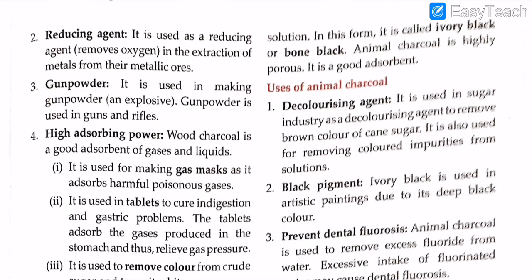Second, wood charcoal is used as a reducing agent — it removes oxygen in the extraction of metals from their metallic ores, just as coke is used. Third, it is used in making gunpowder, an explosive used in guns and rifles.